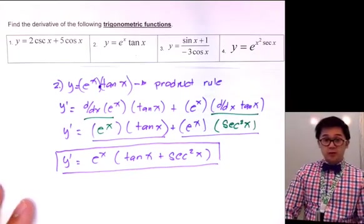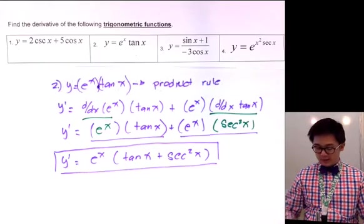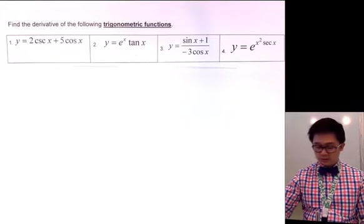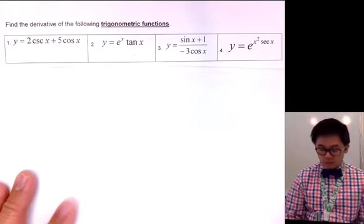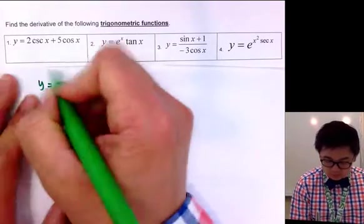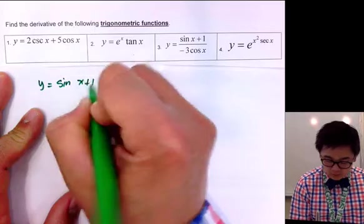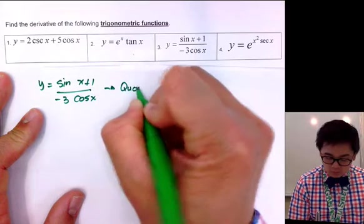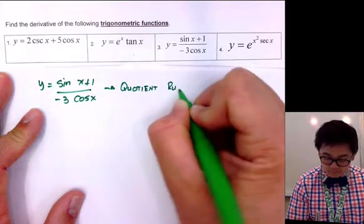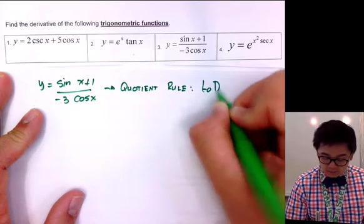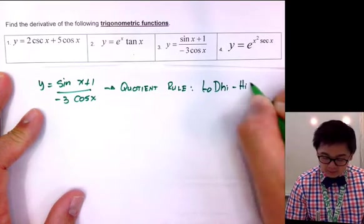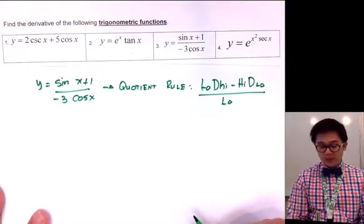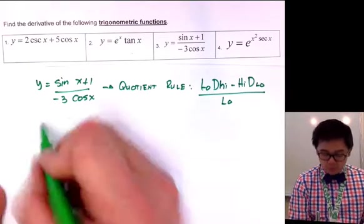Now let's find the derivative of problem number three. In this case we're going to use the quotient rule. We have y equals sine x plus one, all over negative three cosine x. We'll use the quotient rule, which is: low d high minus high d low, all over low squared, where low is the denominator and high is the numerator.